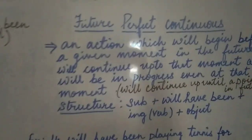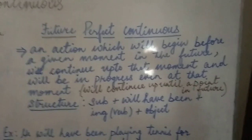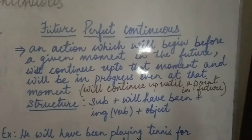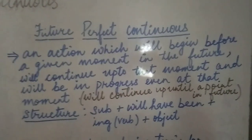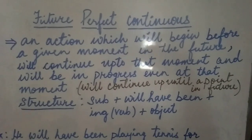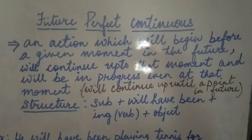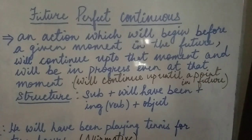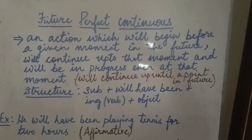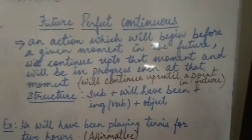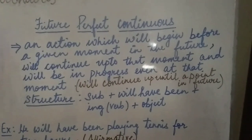Now let's come to future perfect continuous. What is future perfect continuous? Future perfect continuous describes an action which will begin before a given moment in the future, will continue up to that moment, and will be in progress even at that moment. That means it will continue up until a point in the future — it will go on until some point in the future.